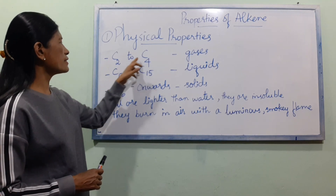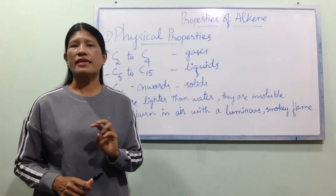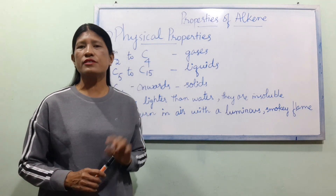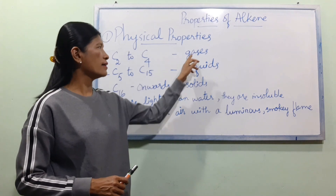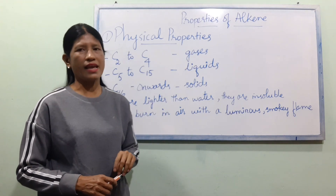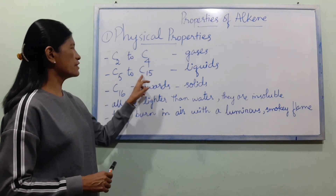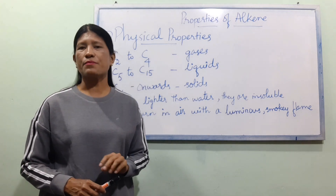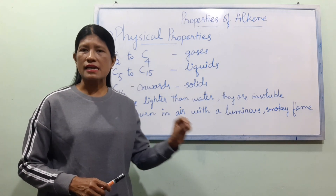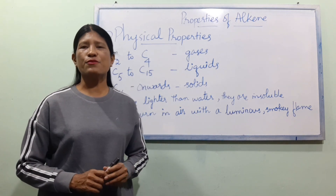C2 and C4 are alkene. C5 and above are also alkene compounds.